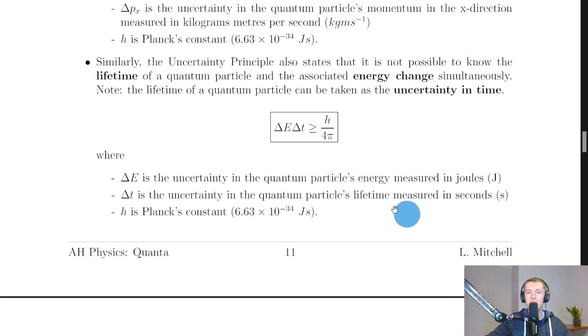And similarly, we have an uncertainty principle in terms of energy and time. So it says the uncertainty principle also states that it is not possible to know the lifetime of a quantum particle and the associated energy change simultaneously. Note the lifetime of a quantum particle can be taken as the uncertainty in time. So we can call the lifetime delta t.